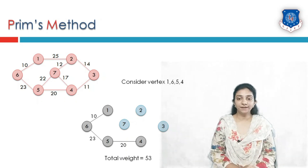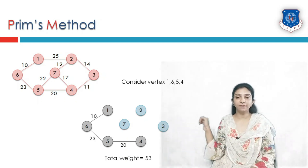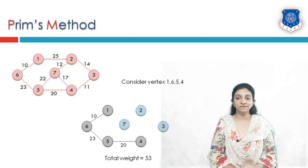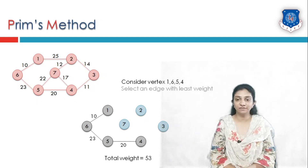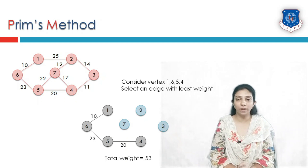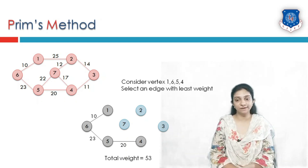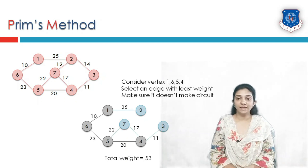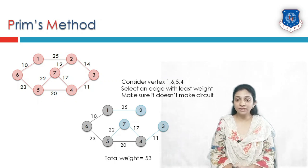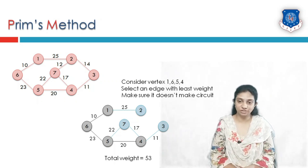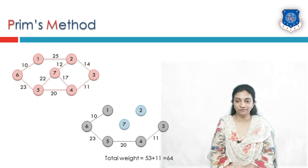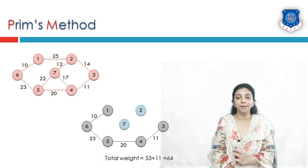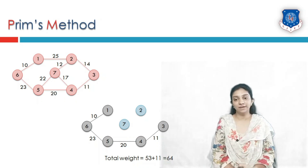Now we consider vertices 1, 4, 5, and 6, and all edges associated with them. We select the edge with the least weight that creates no circuit. The candidate edges are 25, 22, 17, and 11. We keep only edge with weight 11 and remove the rest. The previous weight was 53, and adding edge 11 gives a total tree weight of 64.